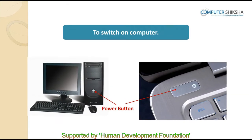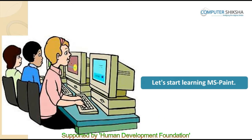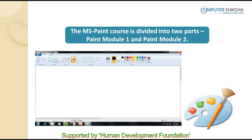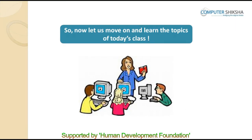Let us all go ahead now and switch on our computers and open the MS Paint file. Let us now begin with today's class. The MS Paint course is divided into two parts: Paint module 1 and Paint module 2. What you are all learning currently is module 1, and as soon as you complete the next class, you will all have a test for module 1. So now let us move on and learn the topics of today's class.